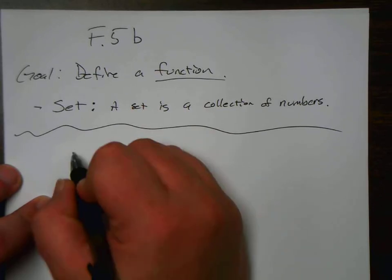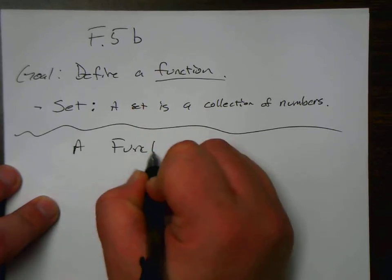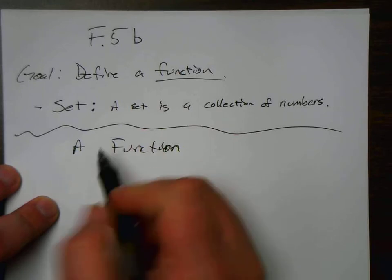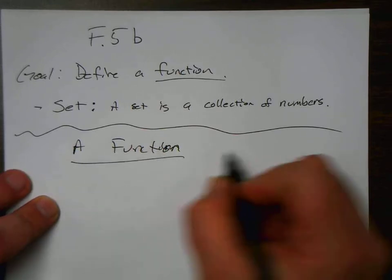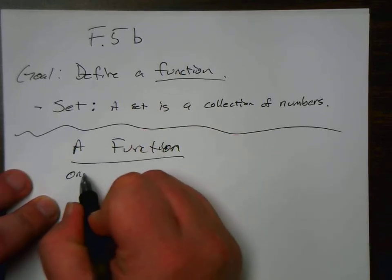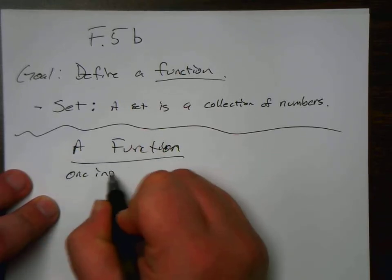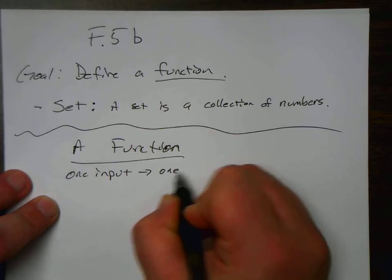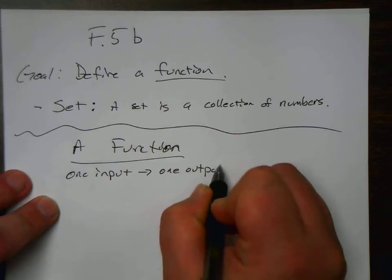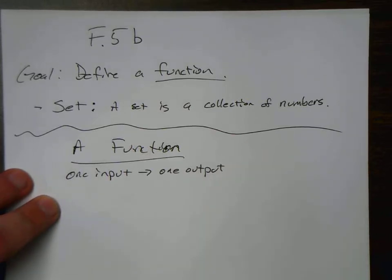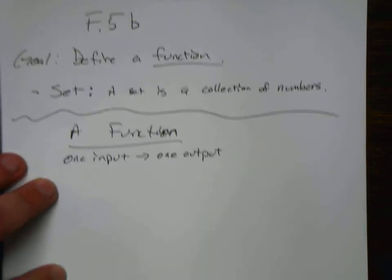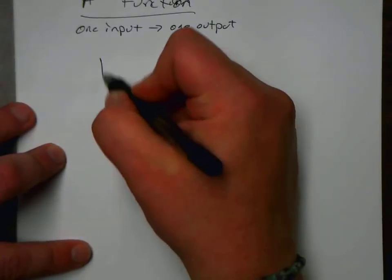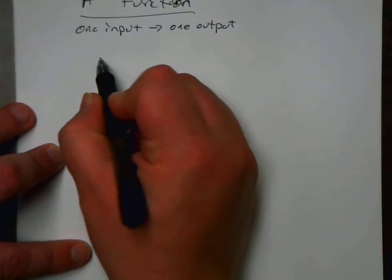So a function has one input and it gives us one output. I like to think about this like a pizza oven.